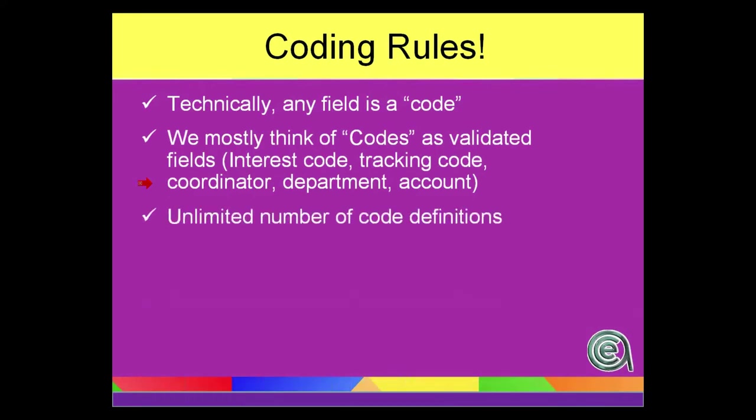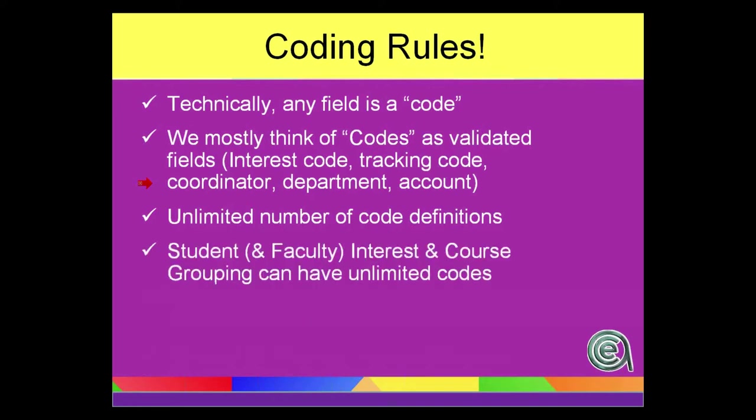Generally, there is an unlimited number of code definitions as set up by you within the code setup area, which we're going to get to. Certain code areas, for instance interest codes on the name record and faculty grouping codes on the course, you can have an unlimited number of codes for any one person or any one course.